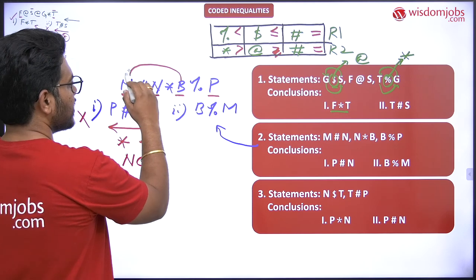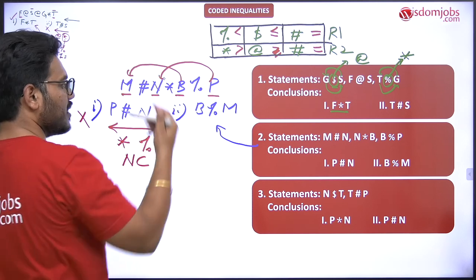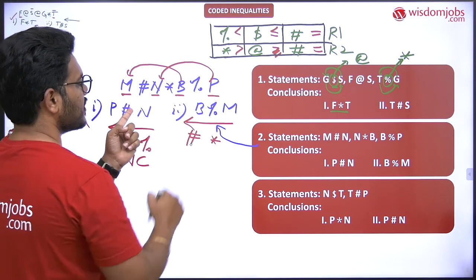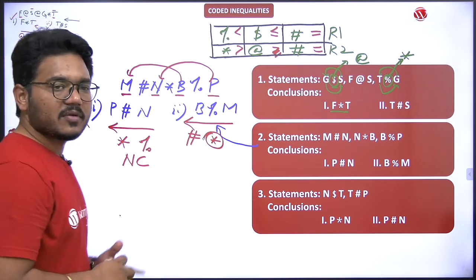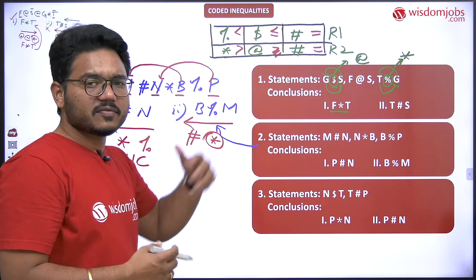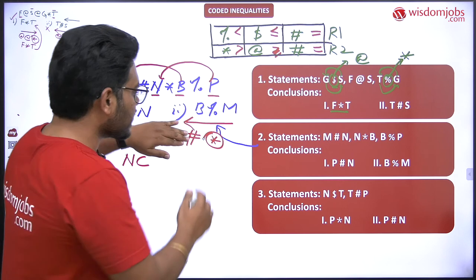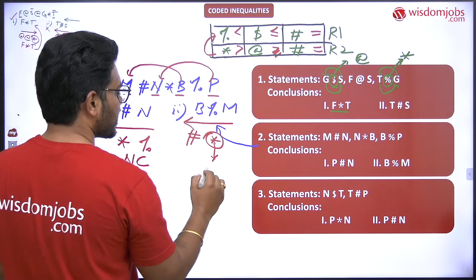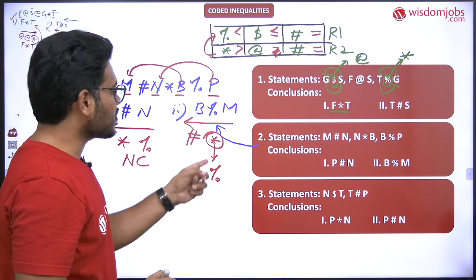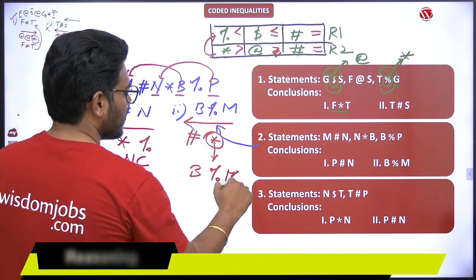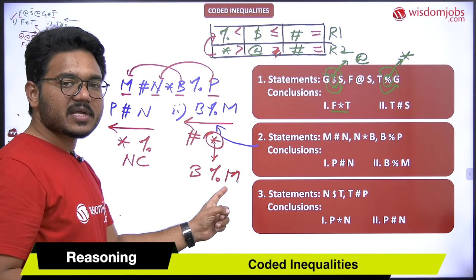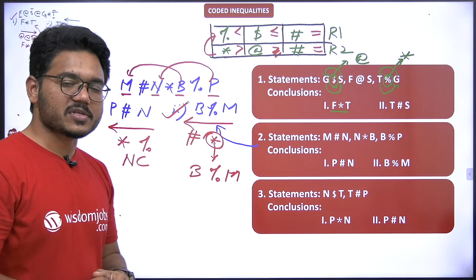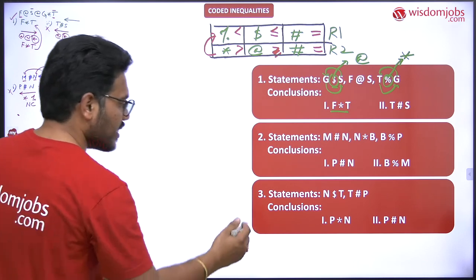For conclusion two: b to m — again establishing a backward relation. The symbols in between are star and hash. Hash represents equal to, so straight away the prioritized symbol is star. Since it is a backward relation, we take the opposite row symbol of star, which is percentile. Our concluded relation is b percentile m, which matches conclusion two. So only the second conclusion follows for question two.